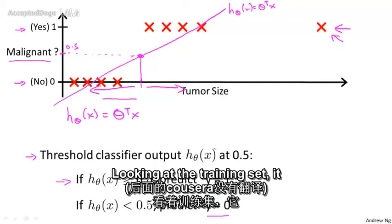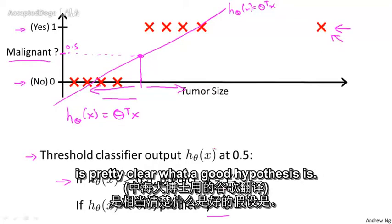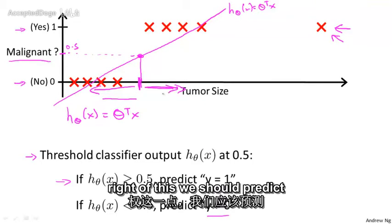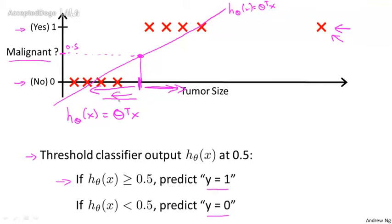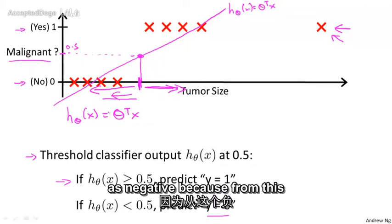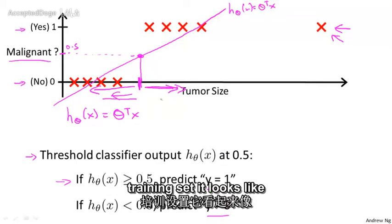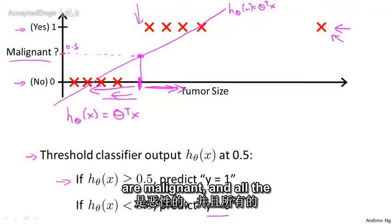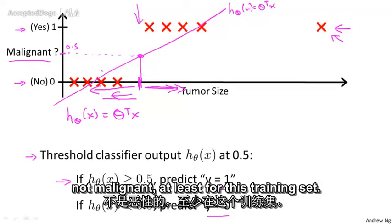Notice that that additional training example, this one out here, it doesn't actually change anything. Looking at the training set, it's pretty clear what a good hypothesis is. Well, everything to the right of somewhere around here, we should predict as positive, and everything to the left, we should probably predict as negative because from this training set, it looks like all the tumors larger than a certain value around here are malignant, and all the tumors smaller than that are not malignant, at least for this training set.